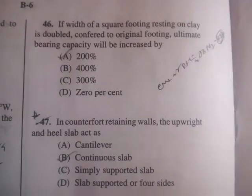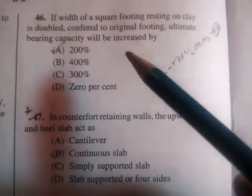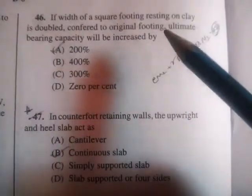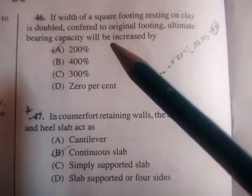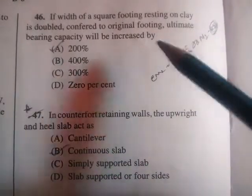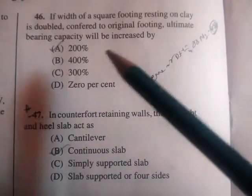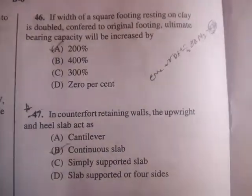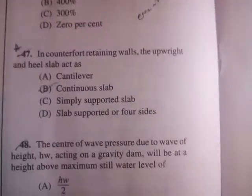Next question: if the width of a square footing resting on clay is doubled compared to the original footing, the ultimate bearing capacity will be increased by 200%. Answer is A.